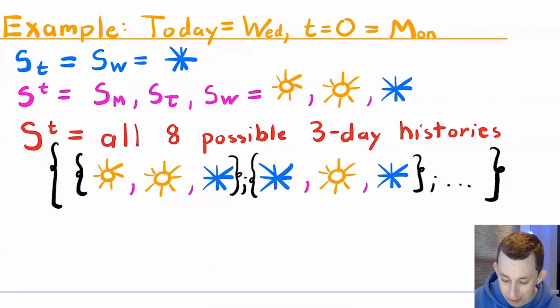So we had sun, sun, snow. It could have been the case that it was snow, sun, snow. And you can think of the other combinations I didn't write here. You would put all those combinations into a set and that's what we call the event history set.